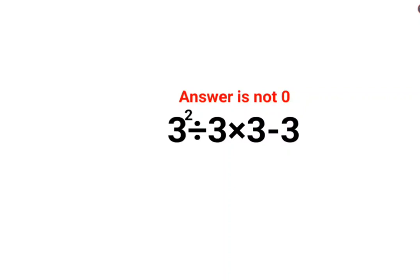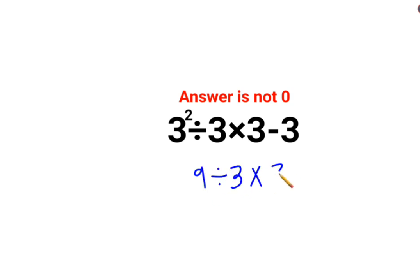Welcome everyone. A lot of people thought that the answer for this one is supposed to be 0. The reason for that is they thought that 3 squared divided by 3 is basically 9 divided by 3, multiplied by 3 minus 3.